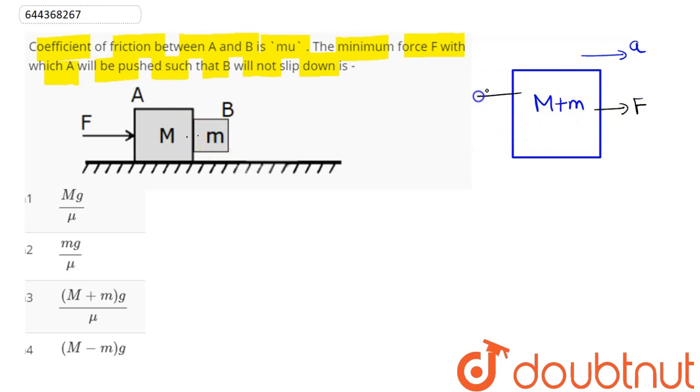So we have the equation F is equal to (M + m) into a. So a here comes as F divided by (M + m). Now here if we draw the FBD for this block B, we can say this block B has mass small m.